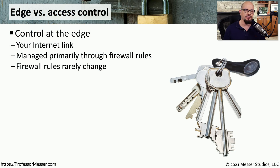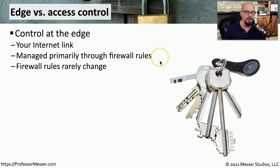There are a number of different ways to control access to your network. When we're setting up a firewall on the edge of our network, we're usually connecting our internal network to the internet. This edge connection is usually managed using rules that we put inside of that firewall. Generally, we set up rules inside the firewall, test those rules, and make sure they're working. At that point, we don't tend to make a lot of changes to the rules inside of that edge firewall.